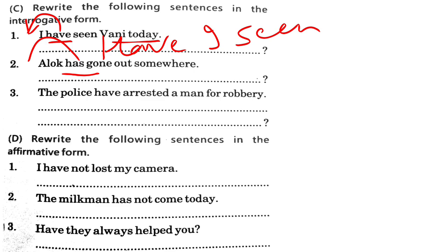'Has Alok gone out somewhere?' Put a question mark at the end. 'The police have arrested a man for robbery' becomes 'Have the police arrested a man for robbery?' Put a question mark at the end.